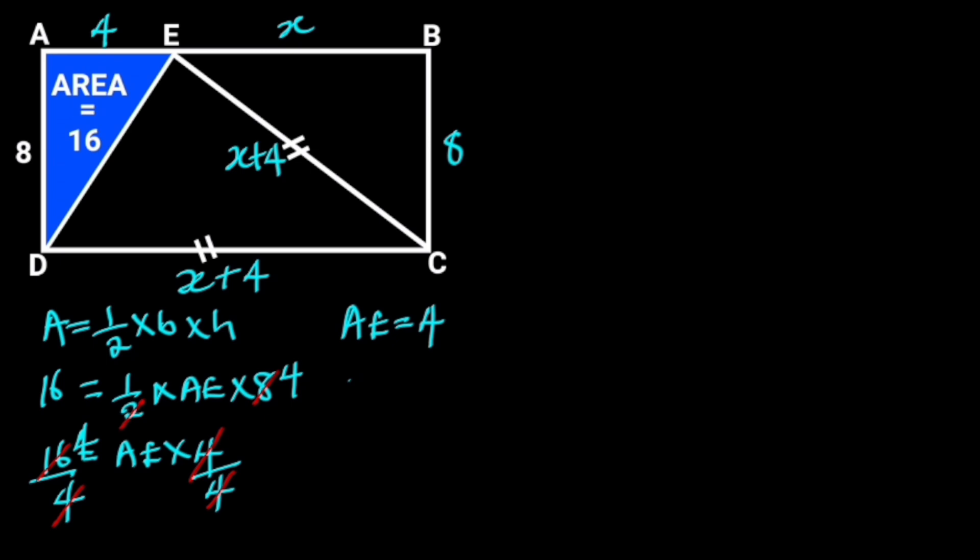Going further, we are going to apply Pythagoras theorem in triangle BCE. From Pythagoras theorem, x plus 4 squared is equal to x squared plus 8 squared.